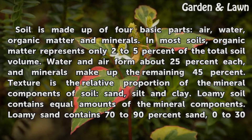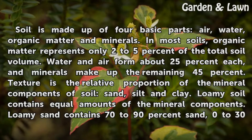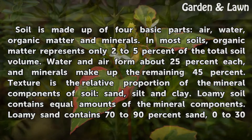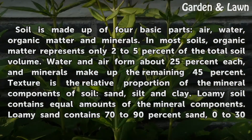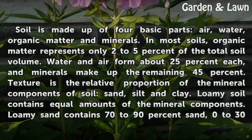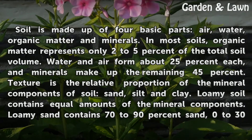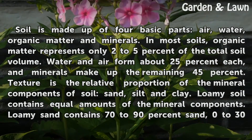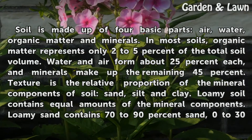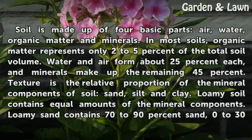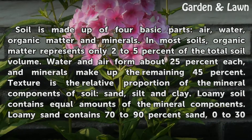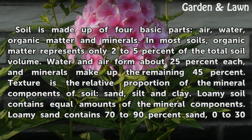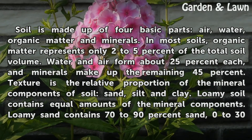Soil is made up of four basic parts: air, water, organic matter, and minerals. In most soils, organic matter represents only 2–5% of the total soil volume. Water and air form about 25% each, and minerals make up the remaining 45%.